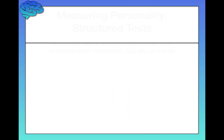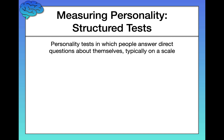The Big Five personality inventory is an example of a structured personality test. Structured personality tests are also sometimes called objective tests and they're typically self-report inventories, which have pros and cons as we've already discussed in previous videos. These are typically answered on a scale as a series of very direct questions — one to five, from strongly disagree to strongly agree.